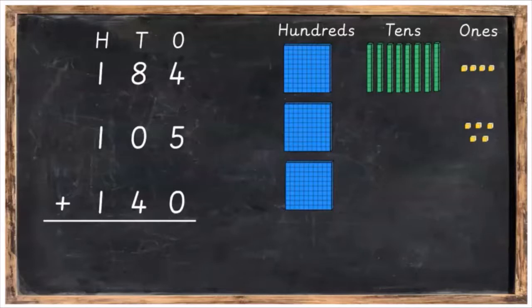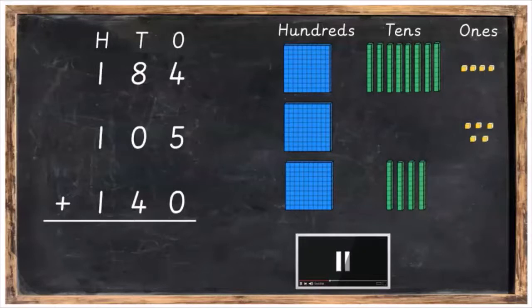And finally, we're going to have 100, four tens and no ones for 140. Press pause, get your sum set up and then press play afterwards.